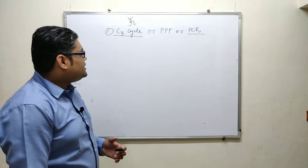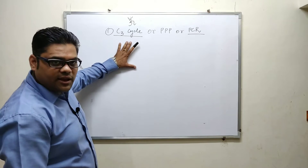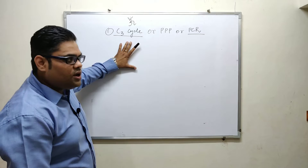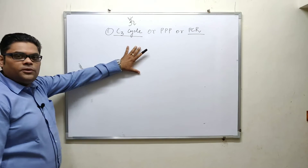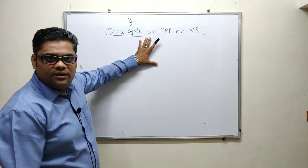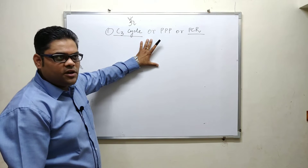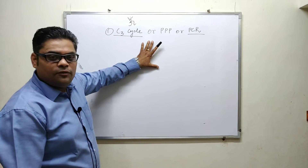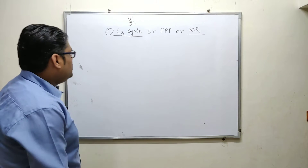The main point to remember for examinations is: it is called the C3 cycle because the first stable compound formed during the reaction is a three-carbon compound known as 3-phosphoglyceric acid (PGA). In this reaction we have compounds with different carbon moieties, but the first stable compound is the three-carbon compound phosphoglyceric acid.